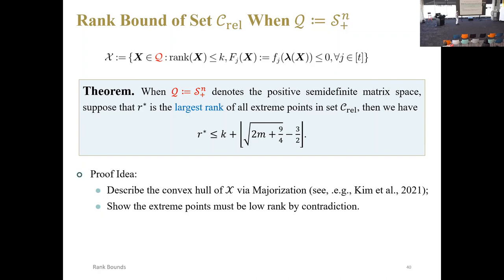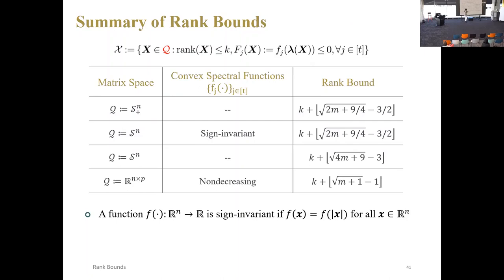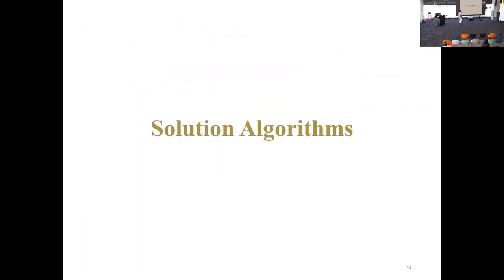The proof idea is to first describe the convex hull and then prove the bound by contradiction. Here's the summary of rank bounds for different matrix spaces. For the positive semi-definite matrix space, we've discussed the bounds. For the symmetric space, we need the spectral function to be sign-invariant — if the function satisfies sign invariance, we obtain the same rank bound as for positive semi-definite space. Without the sign-invariant assumption, the bound increases to almost linear in the square root of 4M. Most surprisingly, for the non-symmetric case, it achieves the best low-rank bound — only linear in the square root of 2M.